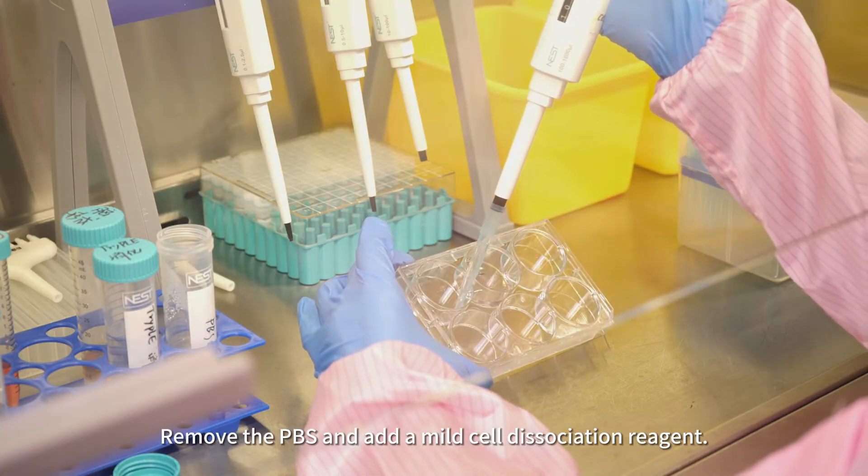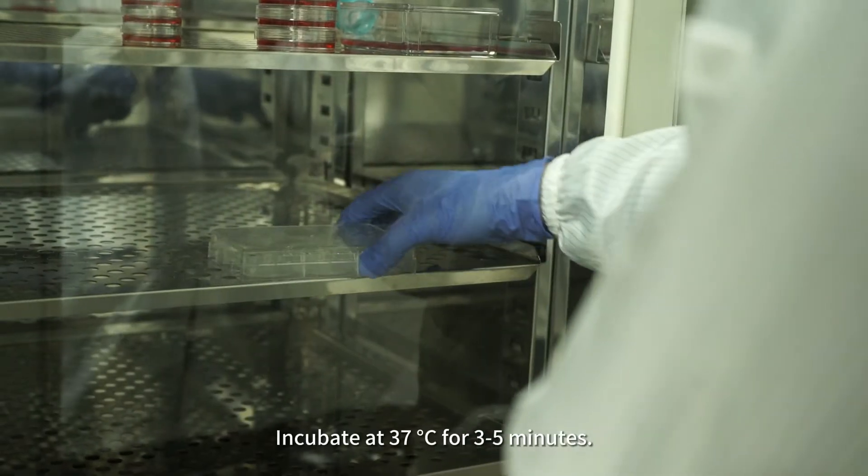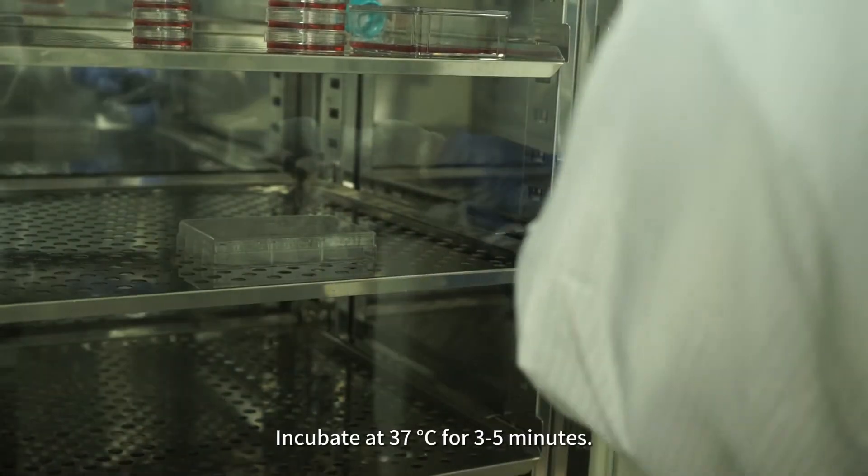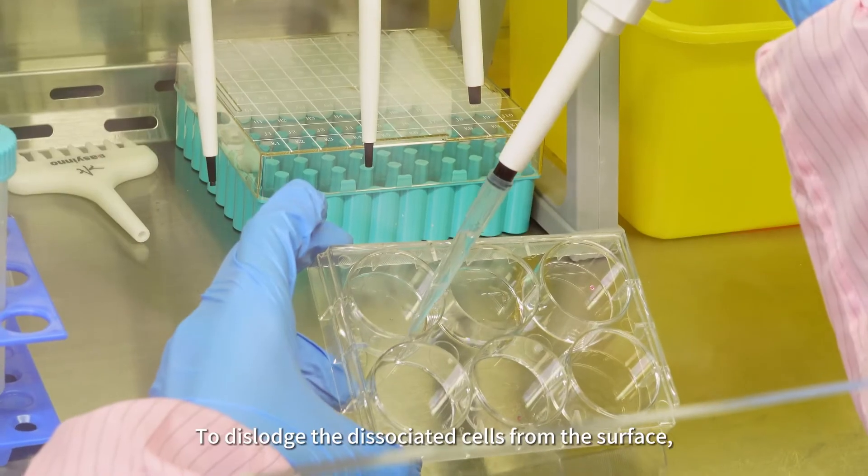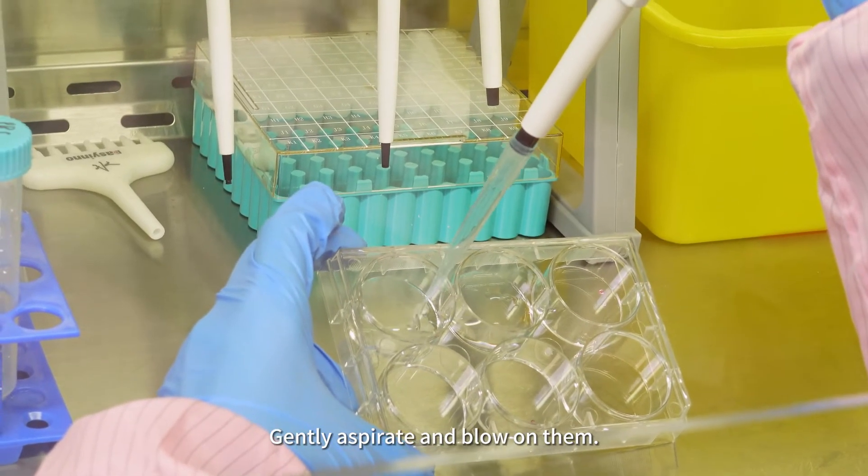Remove the PBS and add a mild cell dissociation reagent. Incubate at 37 degrees Celsius for 3 to 5 minutes. To dislodge the dissociated cells from the surface, gently aspirate and blow on them.